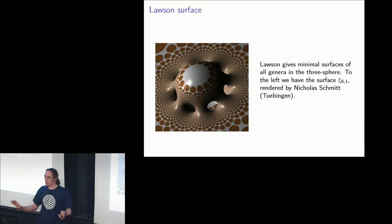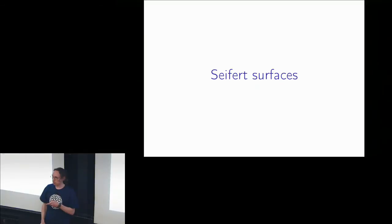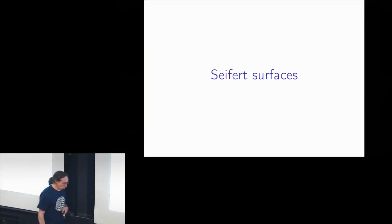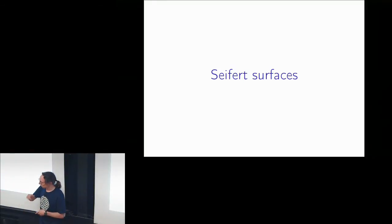That's it for minimal surfaces for the time being. I will now go on to Seifert surfaces. We've already seen one knot in the talk — the trefoil knot, which is the boundary of the triply twisted Möbius band.